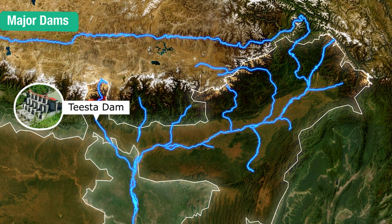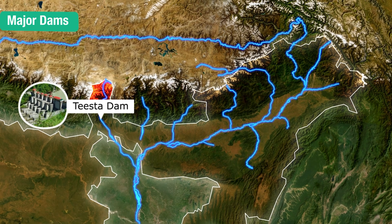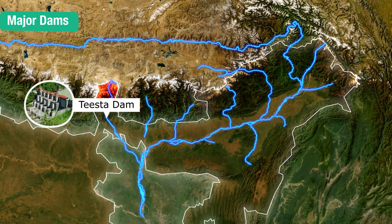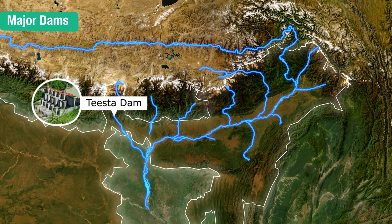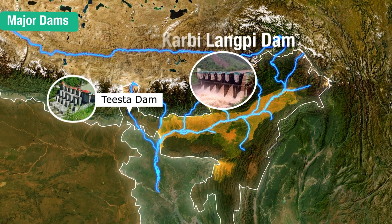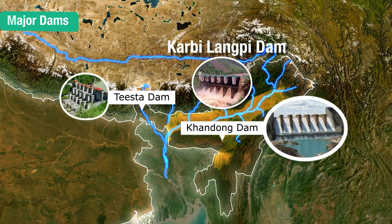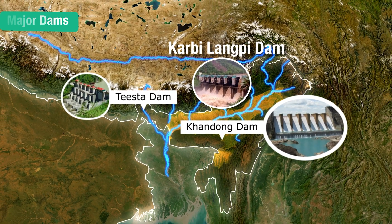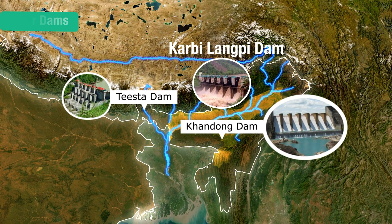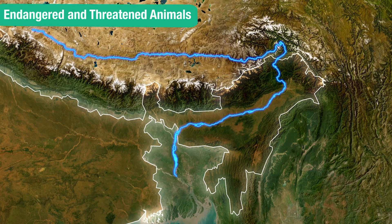Some of the most important dams in the region include the Tista dam in Sikkim, which is one of the most controversial and important dams. Other important dams are the Karbi Langpai dam in Assam and the Khandong dam in Meghalaya.